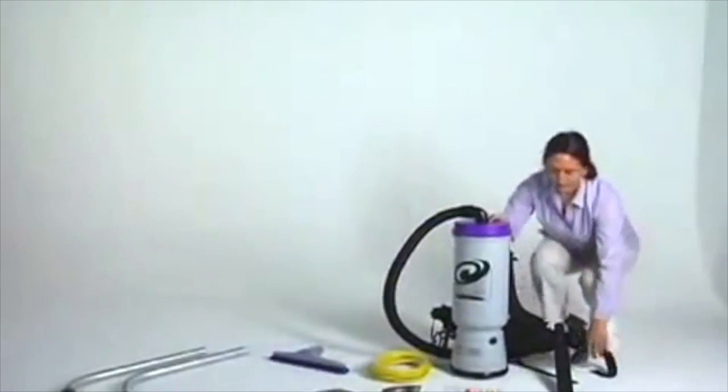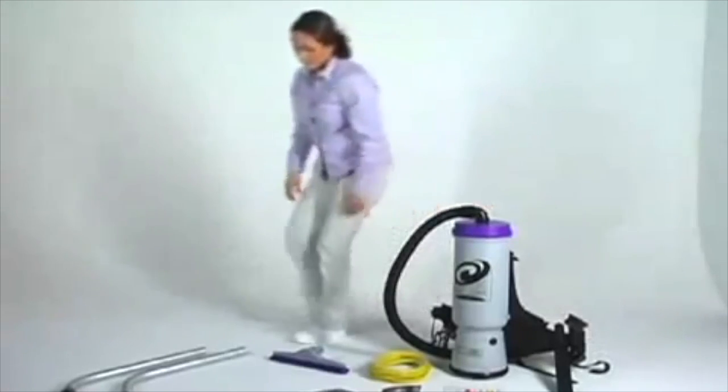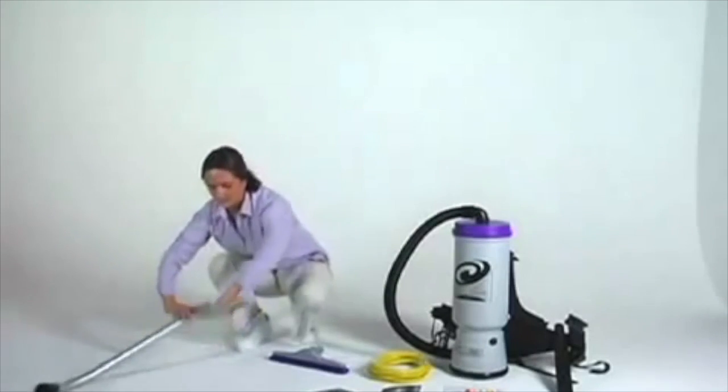To assemble the two-piece aluminum wand, connect the straight ends together, locking them with the button lock.